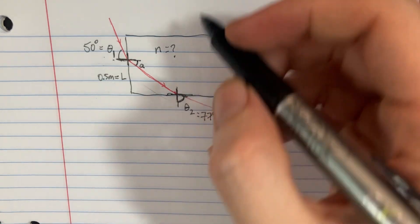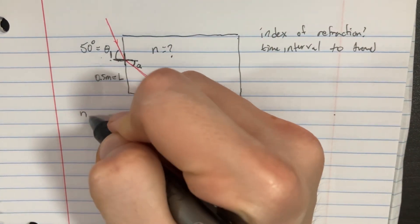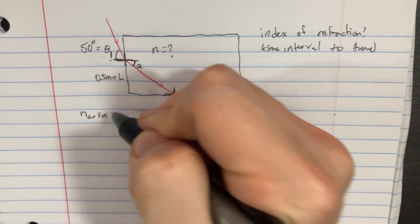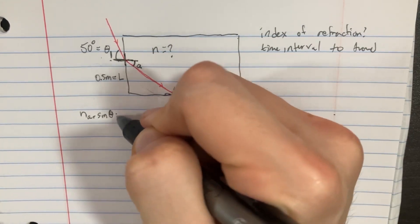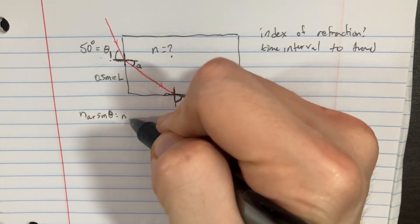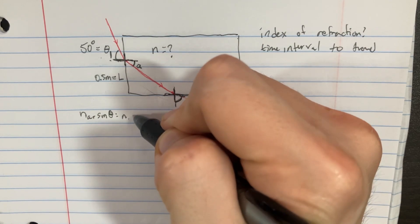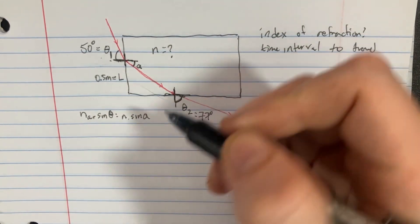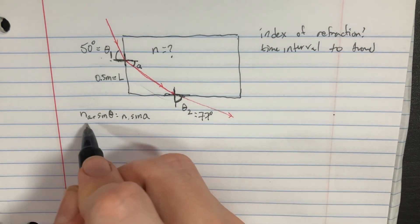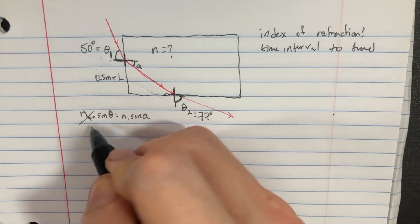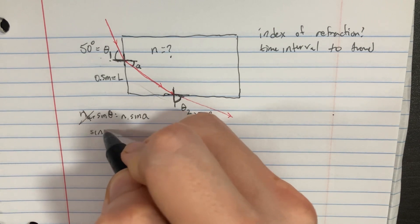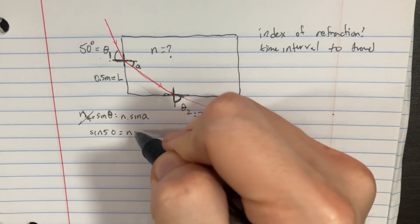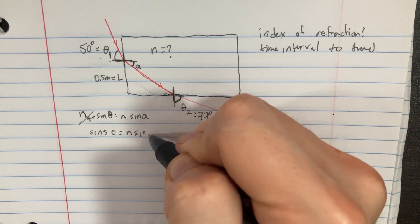So let's go ahead and set up that equation. It would be something like n from the air times the sine of the air would be equal to the n of the block times the sine of the angle there. Now we can cross that one out because it's just 1, and we'll have sine of 50 equals n times the sine of this angle.